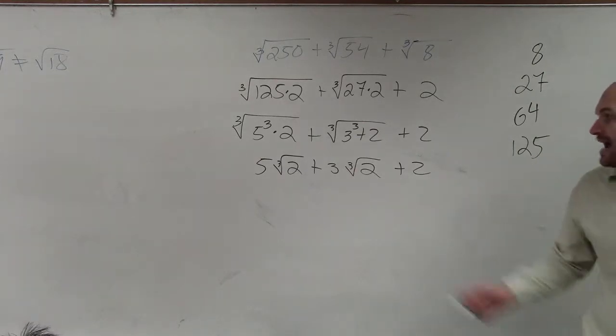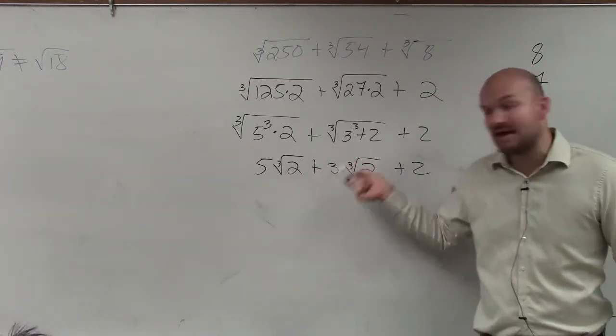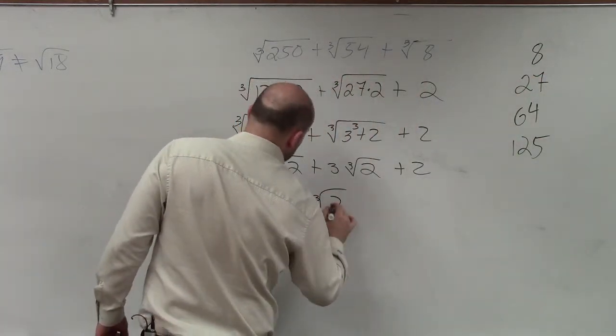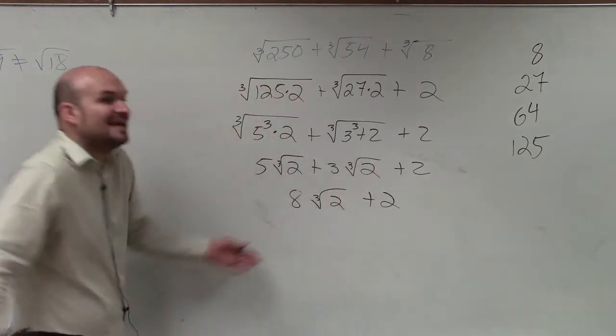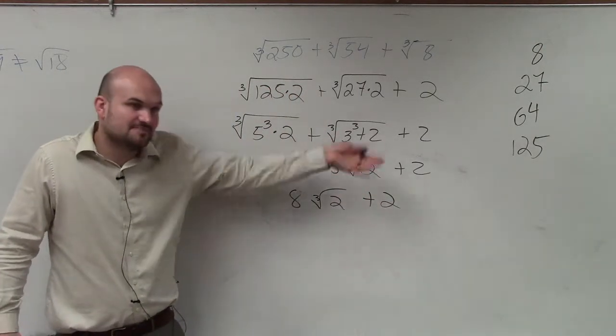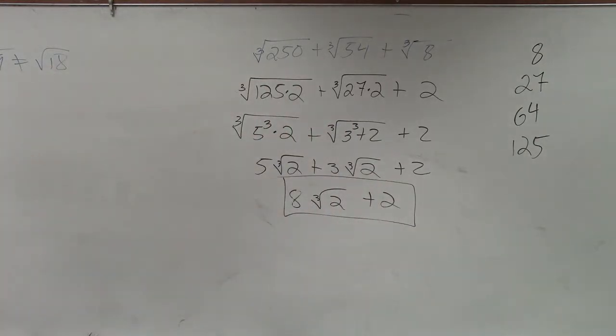Now, we see that I have the cube root of 2 and the cube root of 2. Well, I have 5 of them and I have 3 of them. So if I combine them, I'm going to get 8 cube root of 2 plus 2. I can't do anything with the 2. I can't combine it over to this. I have to leave it just by itself. So this is your simplified answer.